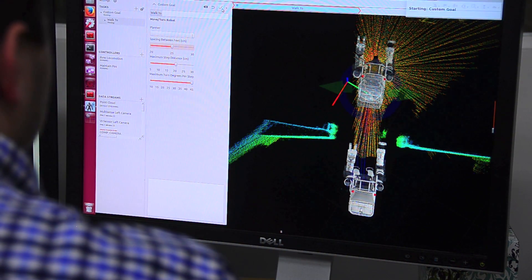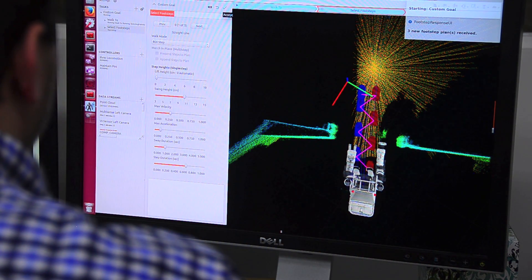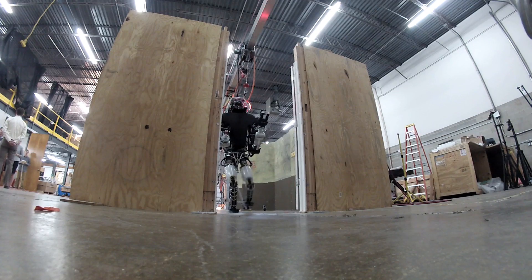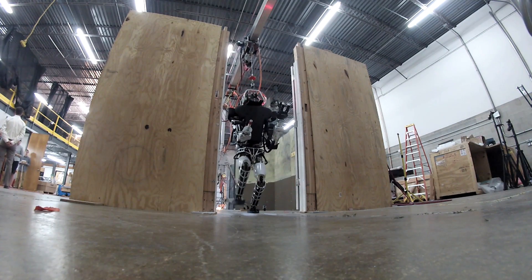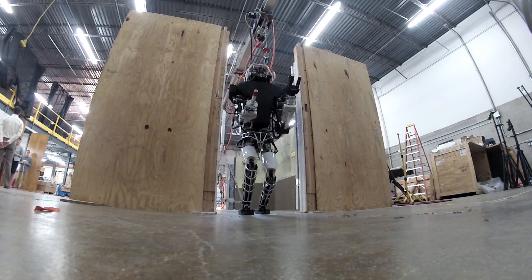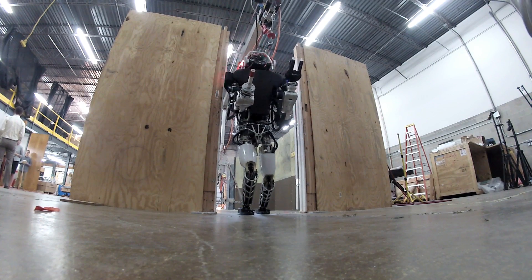And then the robot perceives the environment, recognizes certain salient features, models that, and then generates and executes low-level plans to produce actions that make those behaviors a reality that the human may have guided it through.